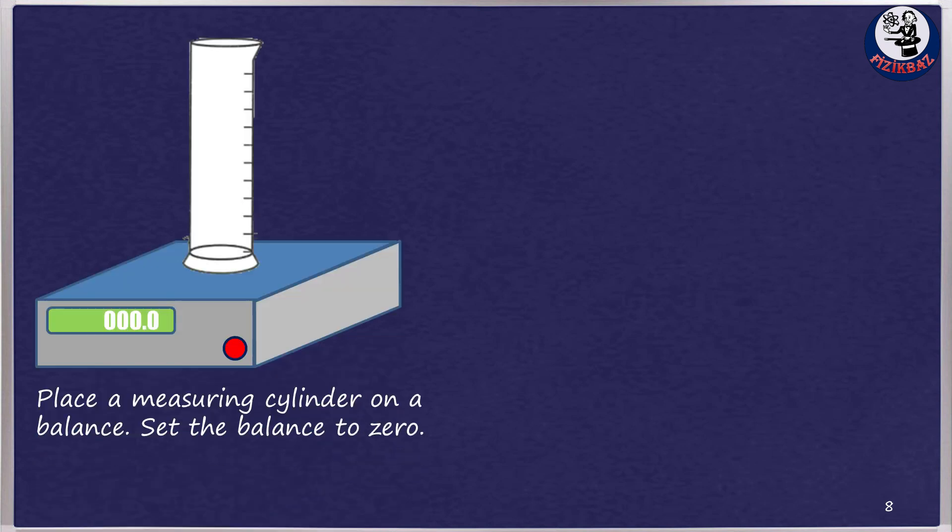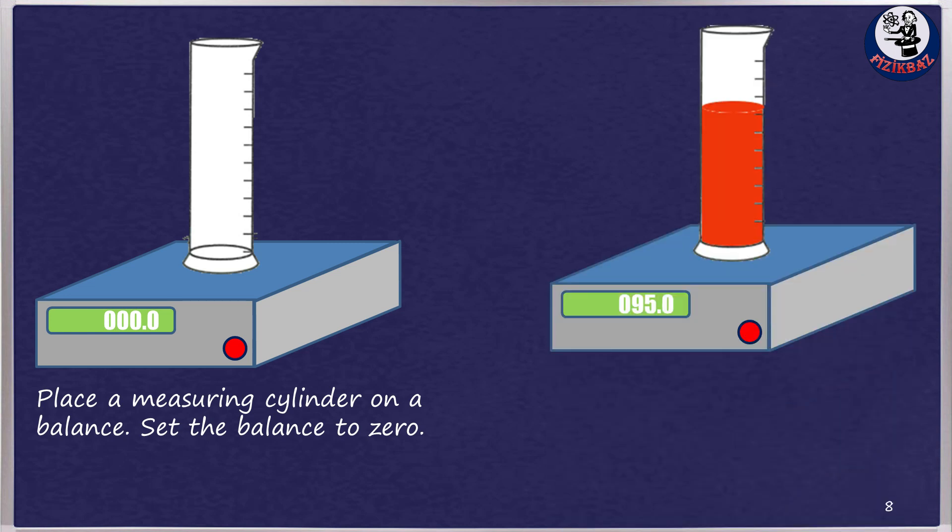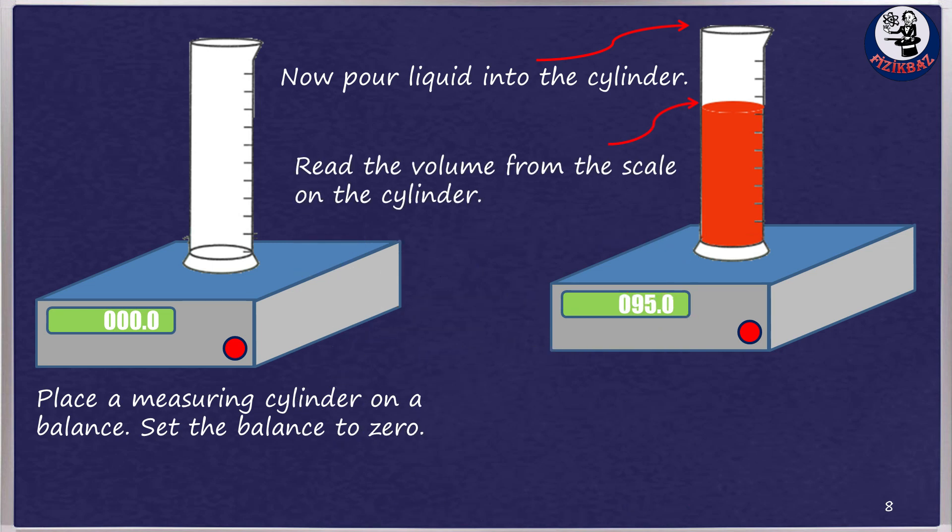Now let's review a method used to determine the density of liquids. In this method, we place a measuring cylinder on a balance and set the balance to zero. After this, we pour liquid into the cylinder and then we read the volume from the scale on the cylinder. The balance shows the mass of the liquid. We can then calculate the density using our formula.